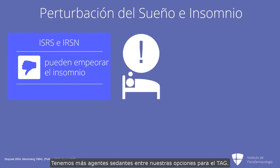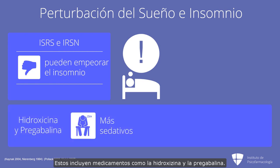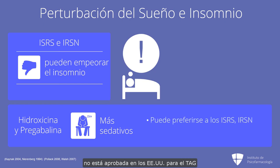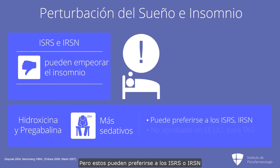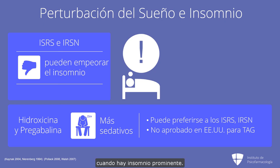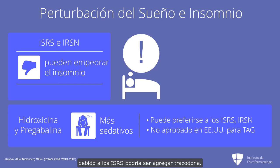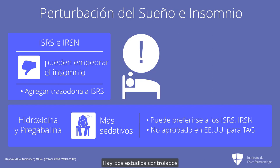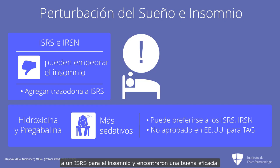We do have more sedating agents among our options for GAD, including drugs like hydroxyzine and pregabalin. I should point out that pregabalin is not approved in the U.S. for GAD, nor is hydroxyzine. But these might be preferred over SSRIs or SNRIs when there is prominent insomnia. Another option for dealing with insomnia due to SSRIs could be to add trazodone — there are two controlled studies where trazodone or placebo was added to an SSRI for insomnia, showing good efficacy.